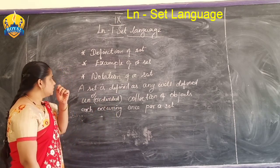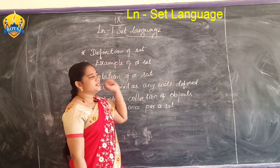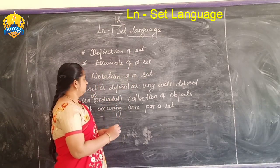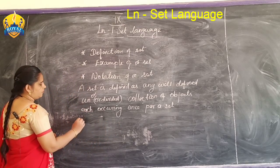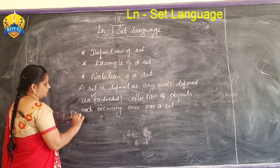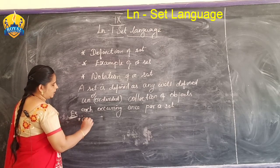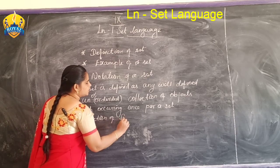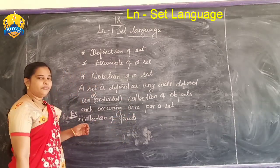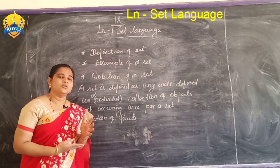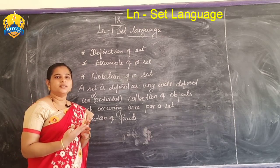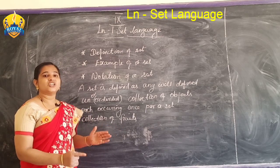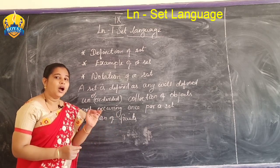Do you understand? Now let's look at examples of a set. First example: collection of fruits — banana, apple, orange, mango, and so on. This is a set — a collection of objects.